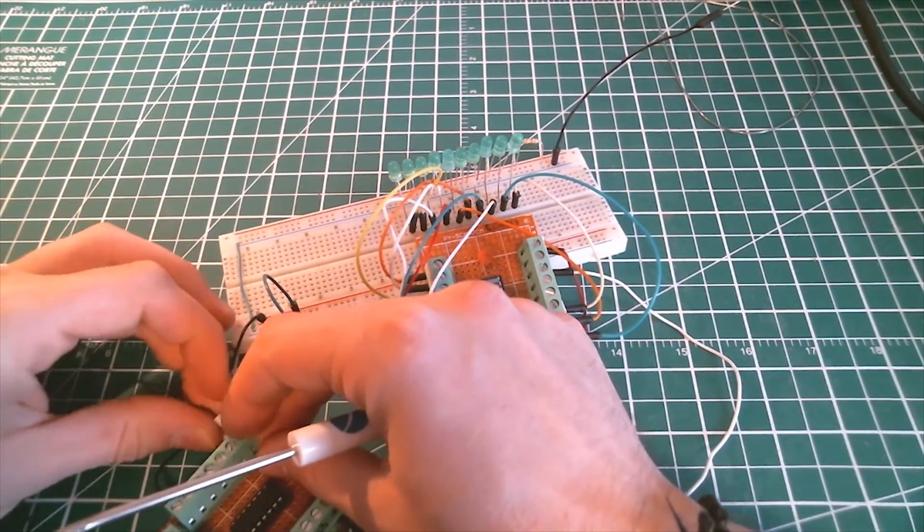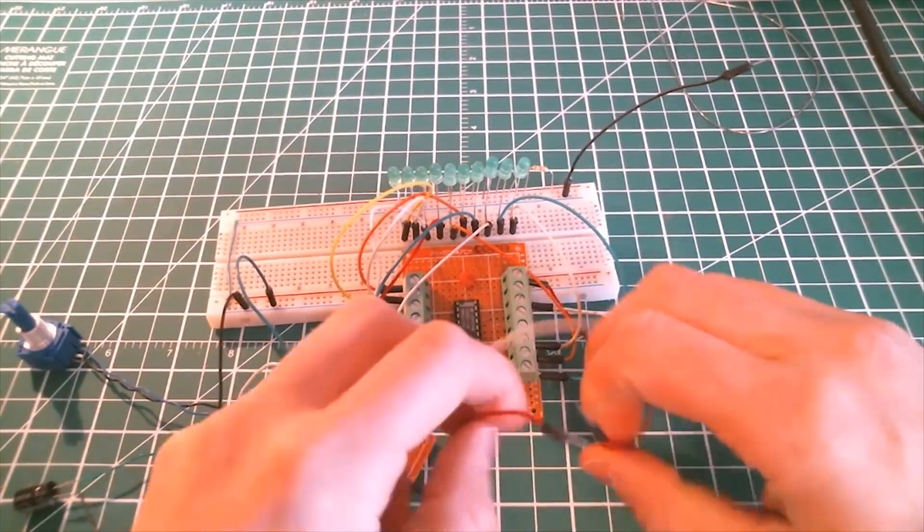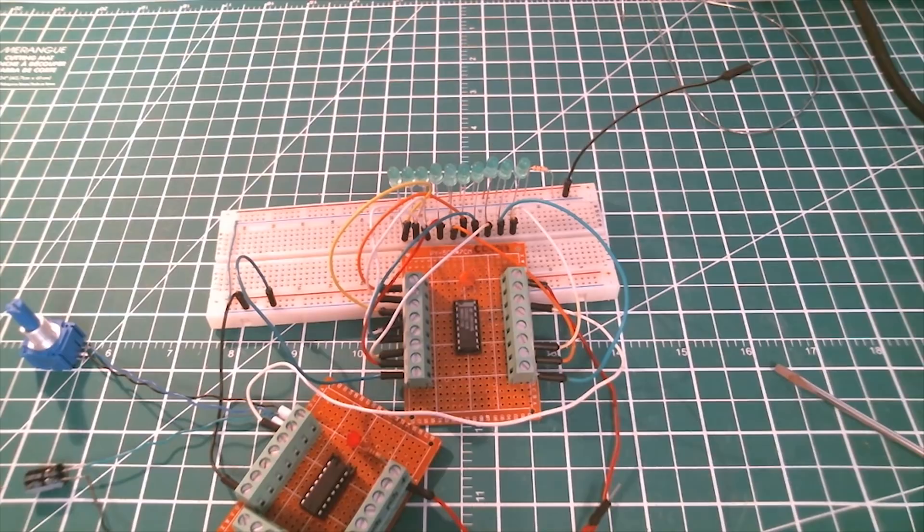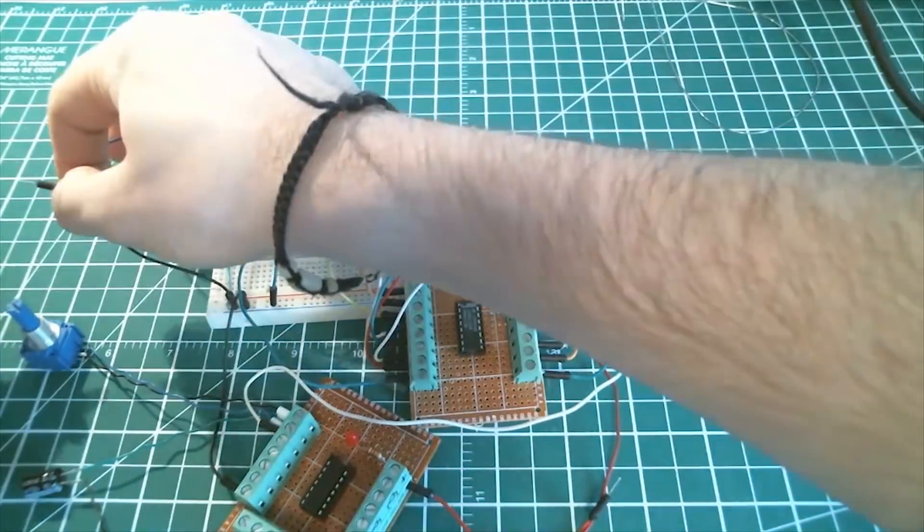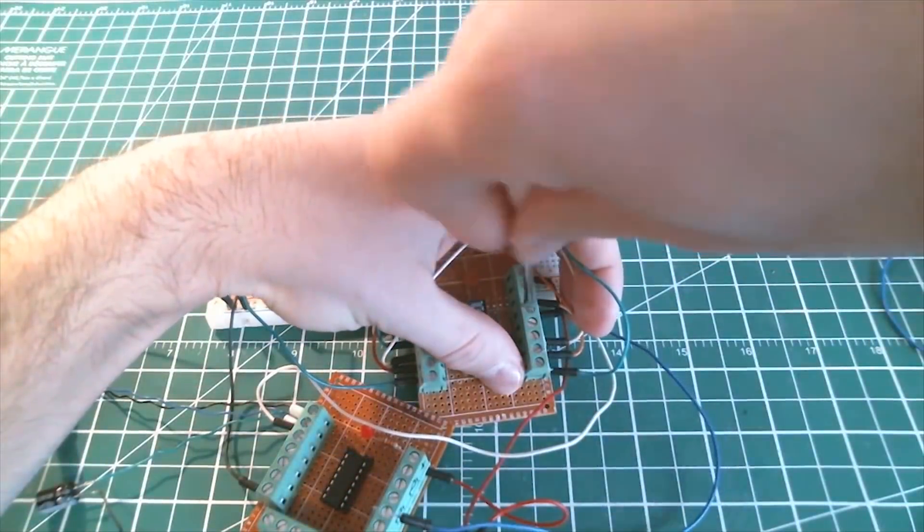My oscillator is running with a 10k potentiometer and a 100-microfarad capacitor. This is a good clock to make a visual effect of the sequence. I power everything on a 9-volt supply or battery.